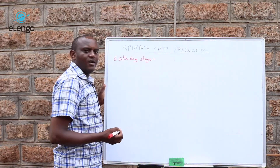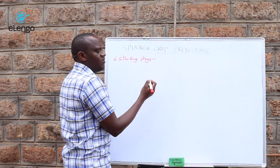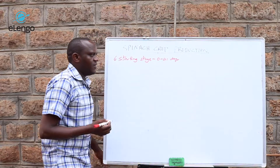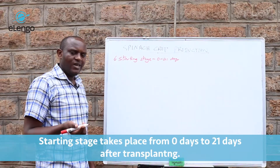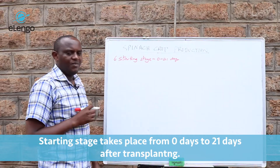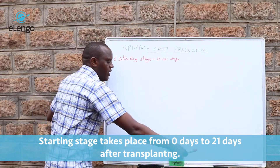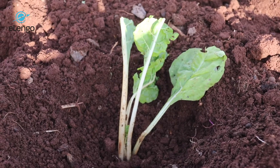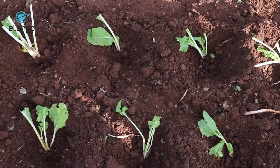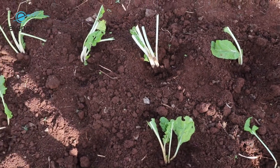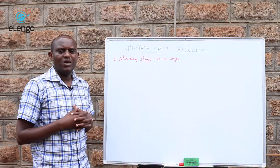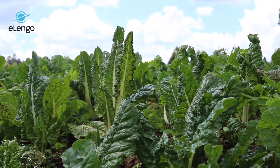Now, on to the starting stage — we are talking about from establishment, which is zero days to 21 days. This is a stage mainly where the plant is trying to establish itself. The young or first leaves are going to wither, then we have emergence of new leaves, starting with one leaf then two leaves and developing into various leaves. It is also a stage where the plant is trying to establish roots.